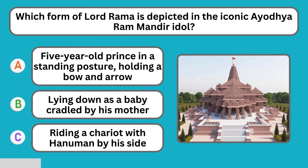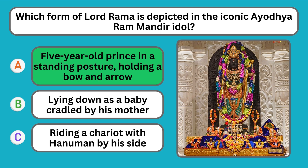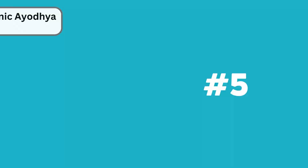Which form of Lord Rama is depicted in the iconic Ayodhya Ram Mandir idol? A five-year-old prince in a standing posture, holding a bow and arrow.